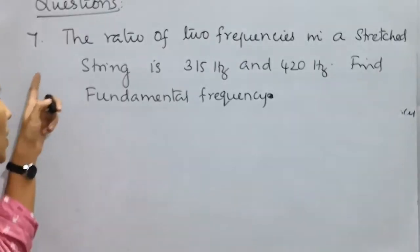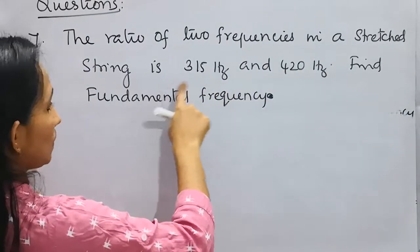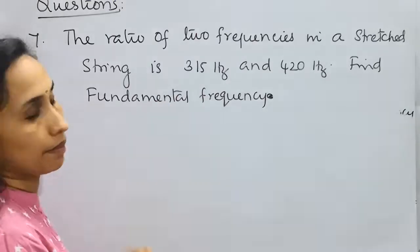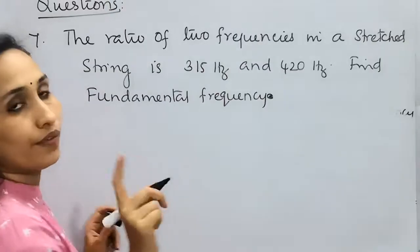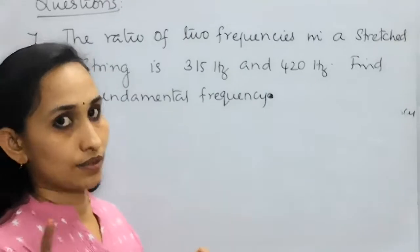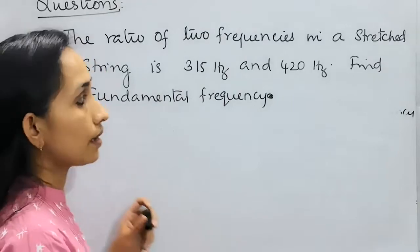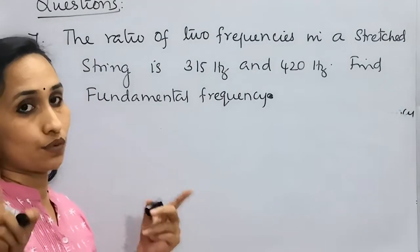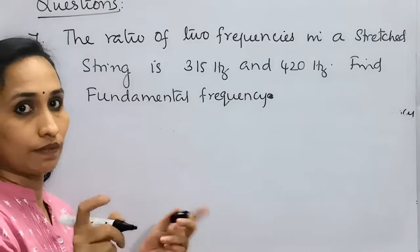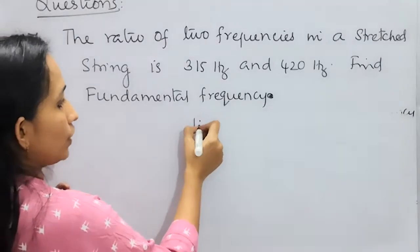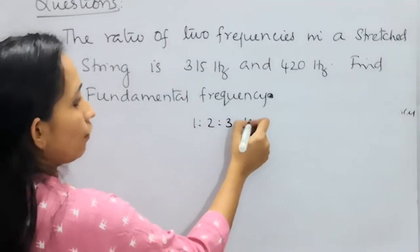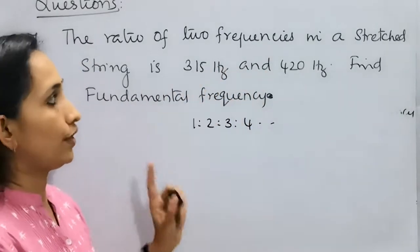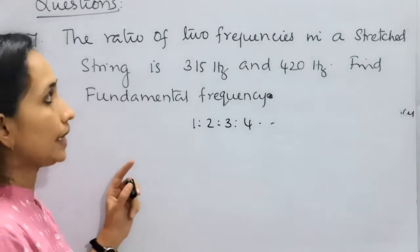Seventh question: two frequencies in a stretched string are 315 Hz and 420 Hz. Find the fundamental frequency. In a stretched string all harmonics are present, so frequencies are in the ratio 1:2:3:4, i.e., F0, 2F0, 3F0. Whenever two frequencies are given, always find their ratio.